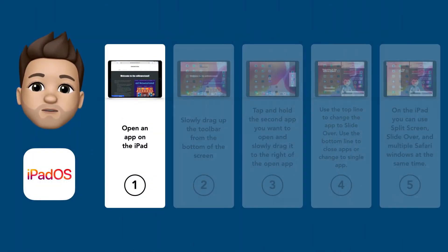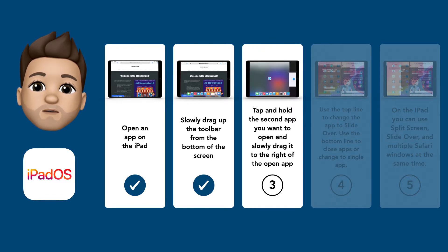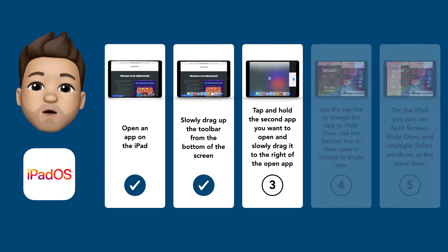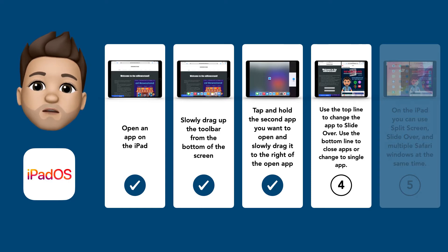To use split screen on your iPad, open an app. Then slowly drag up the toolbar from the bottom of the screen. Next, tap and hold the second app from the toolbar that you want to open and slowly drag it to the right of the open app. Use the top line to change the app to slide over, use the bottom line to close apps or change to a single app.